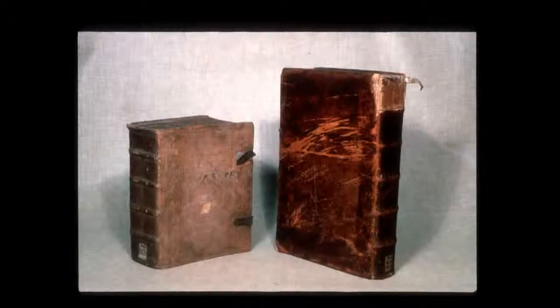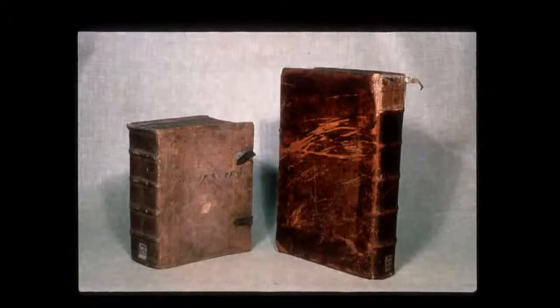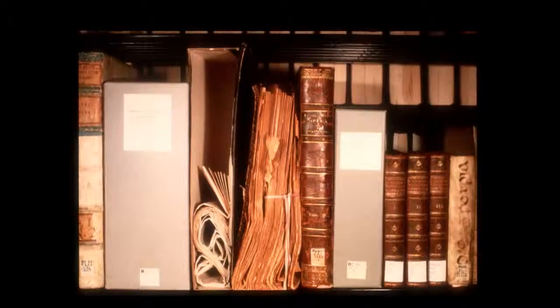An even better way to ensure that books with metal fastenings can't damage their neighbors is to place them in acid-free boxes. Unbound materials are particularly vulnerable to light, dust, and mechanical damage. Acid-free boxes provide a simple, relatively inexpensive means of protecting them. Those shown here have steel-reinforced edges for greater strength and durability.